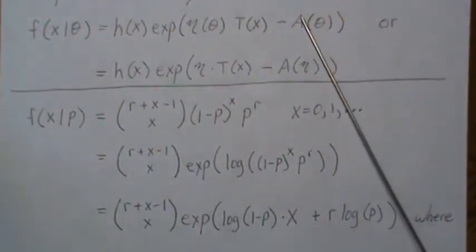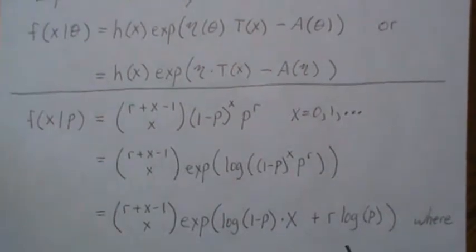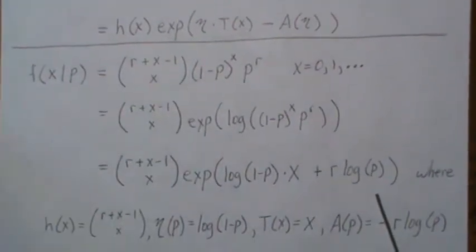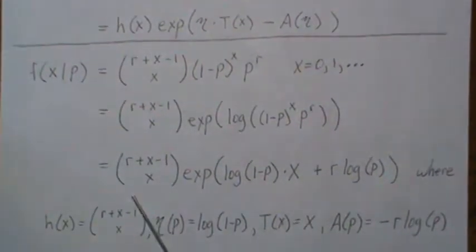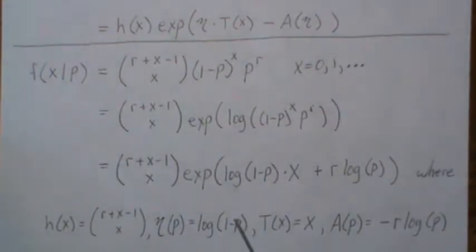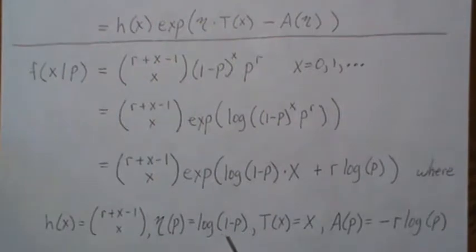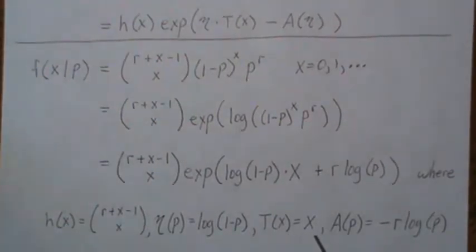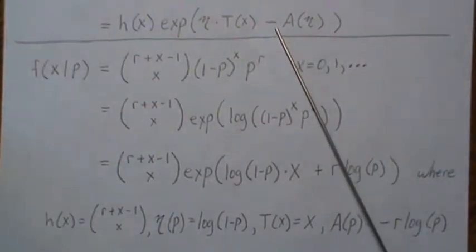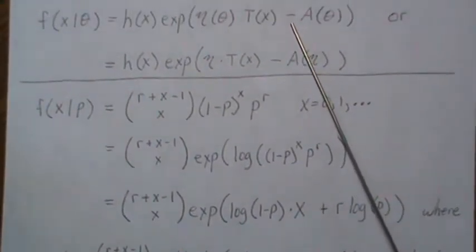Now there's no data here. So that kind of makes it nice for the log partition here. Well, and then that's exactly what it is. So h of x is this, your eta of p, the parameter is log of one minus p, your sufficient statistic is x, and the log partition is minus r log of p, because it has to be in the minus form.